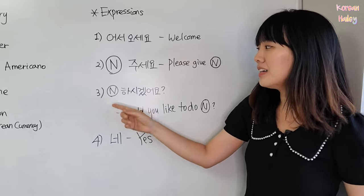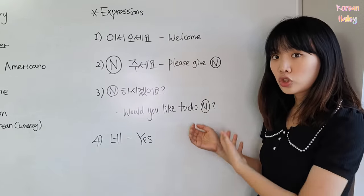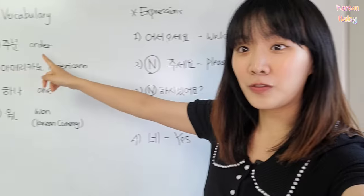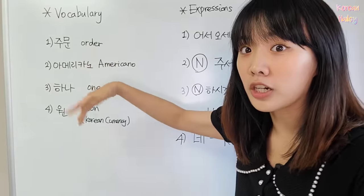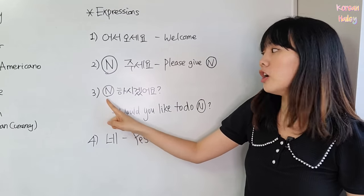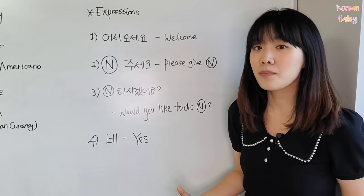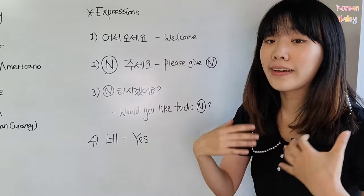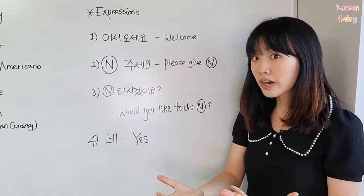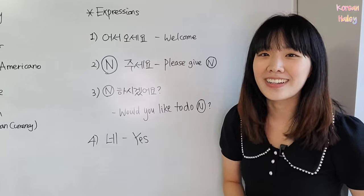The third expression is: noun + 하시겠어요, which means 'would you like to do this?' So for example, 주문 was order, right? So 주문 하시겠어요? means 'Would you like to order something?' It becomes the sentence: Would you like to order? — 주문 하시겠어요?